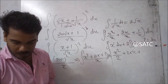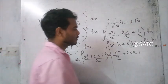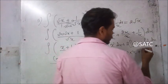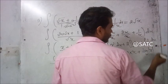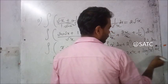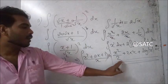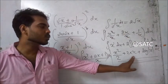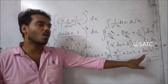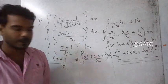Therefore, the final answer is x squared by 2 plus 2x plus log x, plus C.